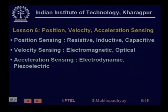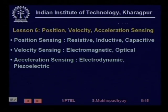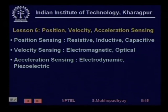Position and velocity sensing are very important for manufacturing from the point of view of manufacturing accuracies. Speed control is actually a very important function. We talked about position sensing using various techniques — resistive, inductive, capacitive — velocity sensing using various electromagnetic and optical sensing techniques, as well as acceleration sensing.